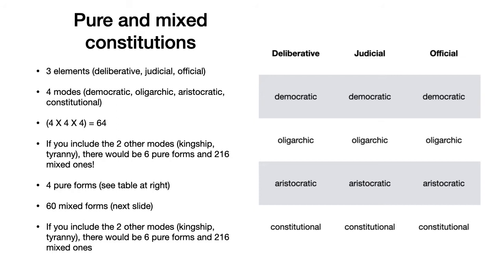Aristotle prefers to discuss just these four modes — democratic, oligarchic, aristocratic, and constitutional — and even tends to focus further on just the combination of democratic and oligarchic elements, because these are the most common. The other combinations are theoretical possibilities, but they may or may not have historical correlates that actually existed. For almost all the ways to combine a democracy and oligarchy, however, we can find historical examples.